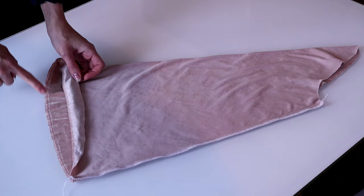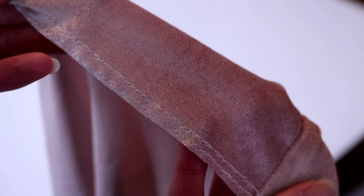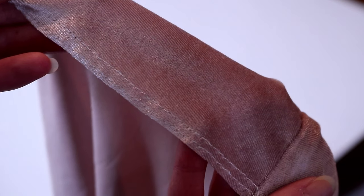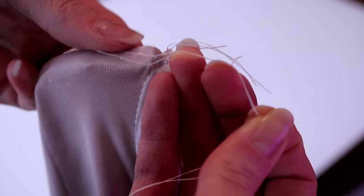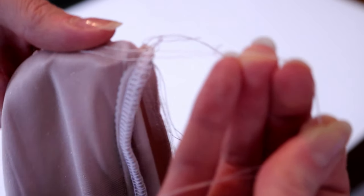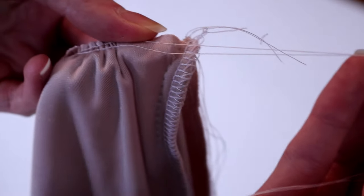Then gather the sleeve hem by stitching two parallel rows at presser foot width from the raw edge of the sleeve hem using long machine stitches at a low thread tension. Leave long thread tails and do not backstitch. Gather the hem by gently pulling on the threads until the width of the hem is the same as the cuff. Even out gathers.